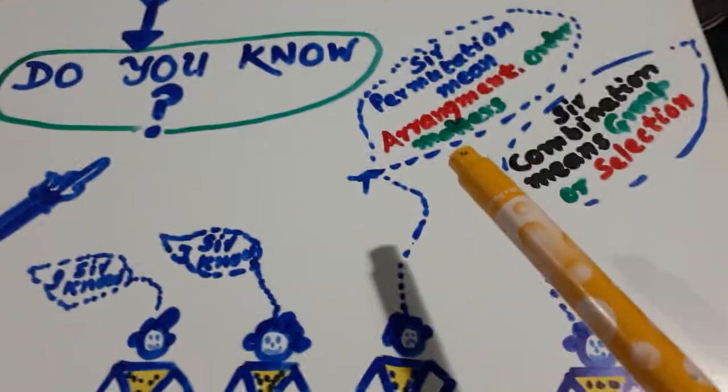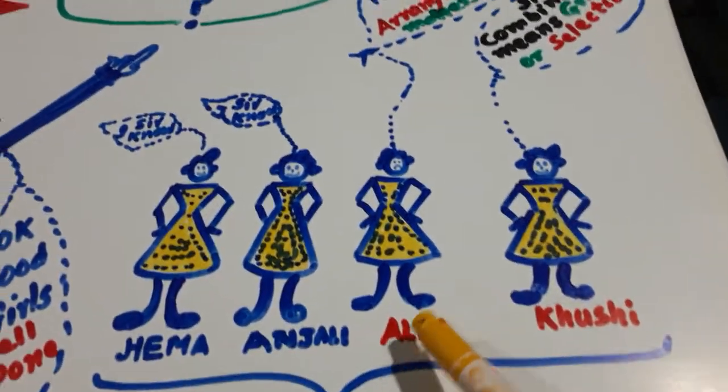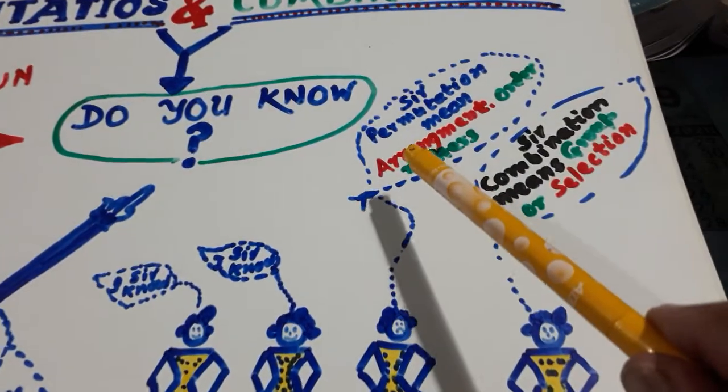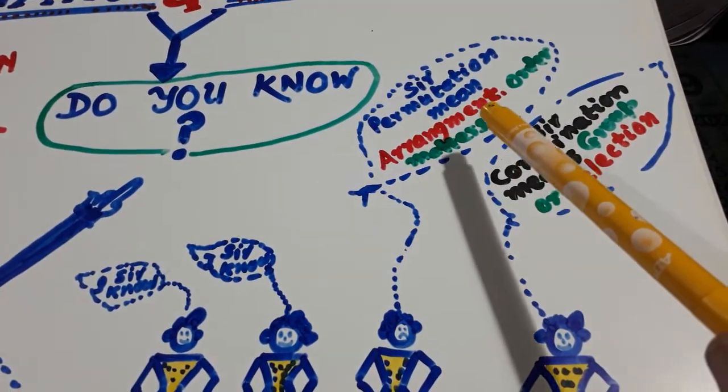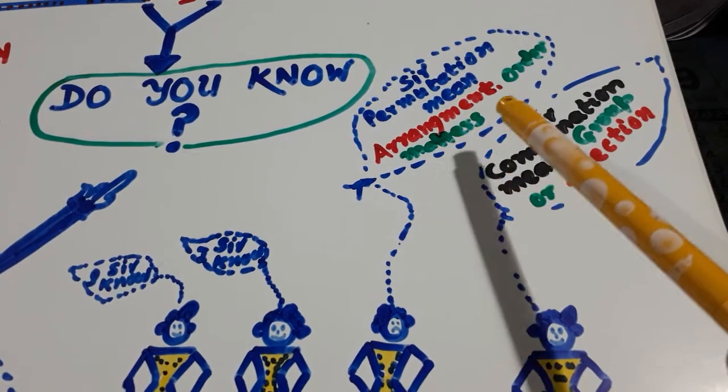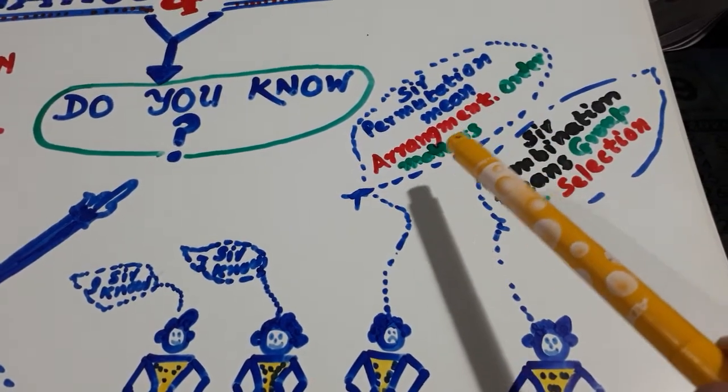Okay, Alka starts. Here is Alka, she starts. Sir, permutation means arrangement and order matters here.